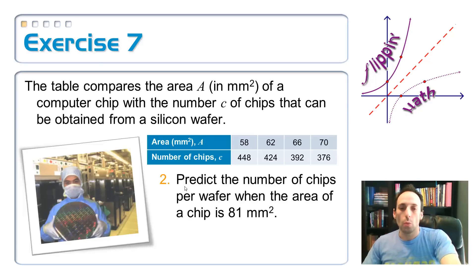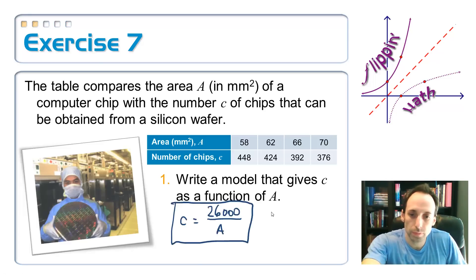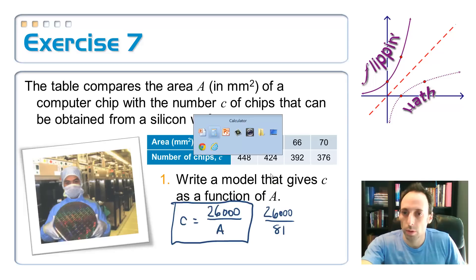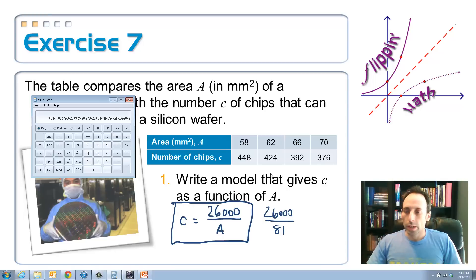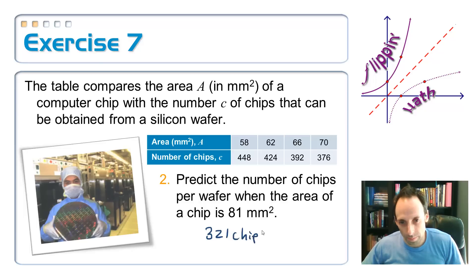The second one of this is what is the number of chips per wafer when the area is 81? 81 millimeters squared. Let's put in 81 here. So, 26,000 divided by 81. Pull up the calculator again. 26,000 divided by 81. And I'm going to say I can cut about 321 from that. So, I can cut about 321 chips.